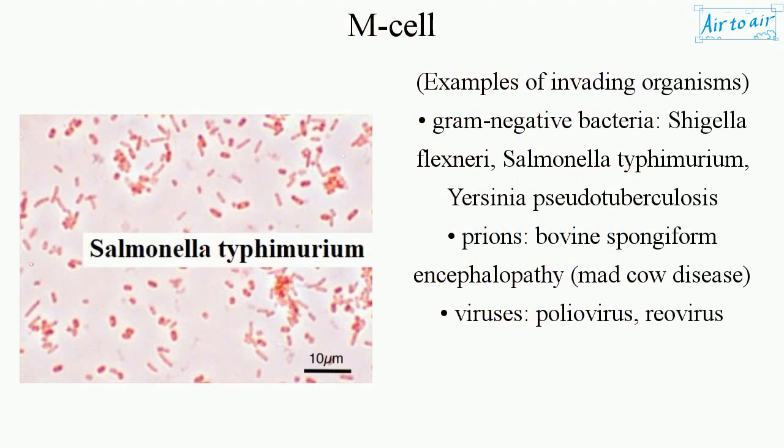Examples of invading organisms: gram-negative bacteria such as Shigella flexneri, Salmonella typhimurium, and Yersinia pseudotuberculosis; prions such as bovine spongiform encephalopathy (mad cow disease); and viruses such as poliovirus and reovirus.